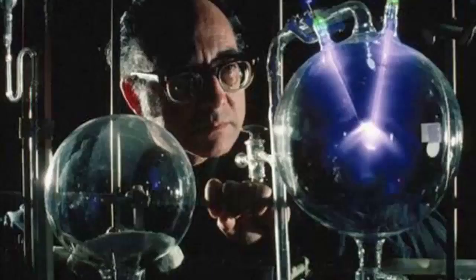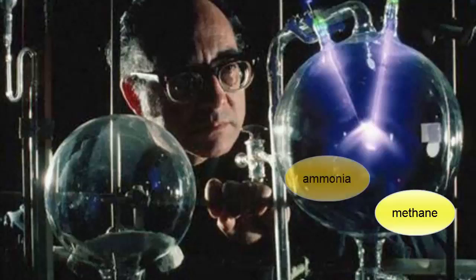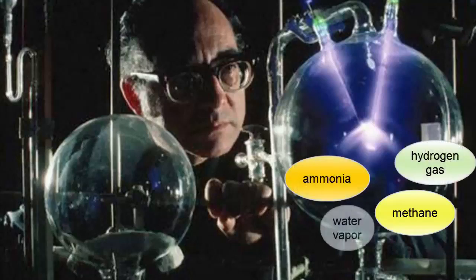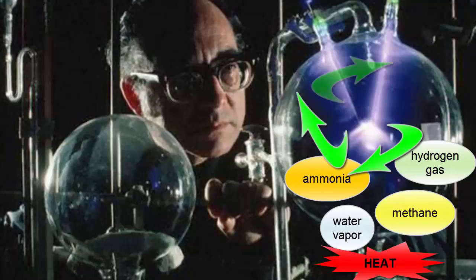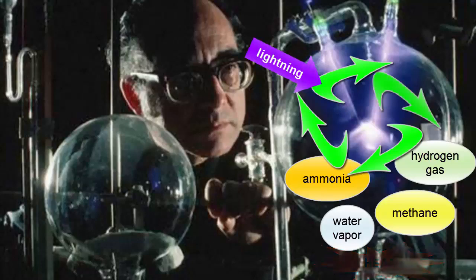One of the first experiments to simulate the formation of the basic molecules of life was done by Stanley Miller as a graduate student at the University of Chicago in the early 1950s. Into a closed system of flasks, Miller put methane, ammonia, hydrogen gas, and water vapor — all materials that would have been major components of the early Earth's atmosphere. He warmed a soup of these chemicals, circulated them through a region where they were subjected to electric sparks simulating lightning, and cooled them and returned the products to the soup.